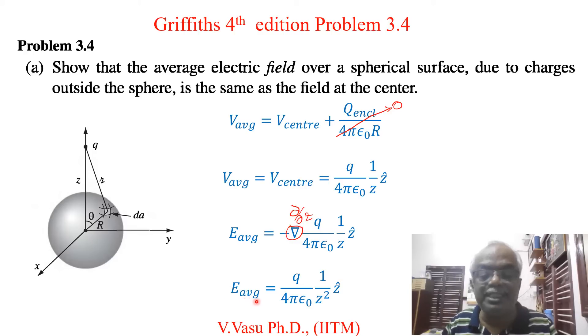So the average electric field E_avg equals q/(4πε₀z²)ẑ.